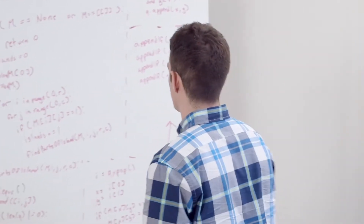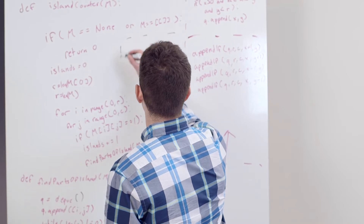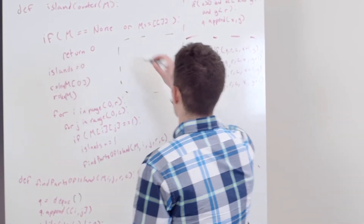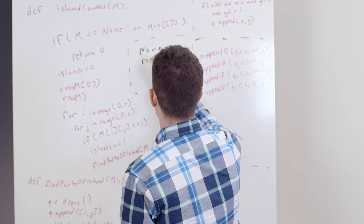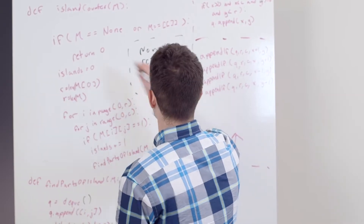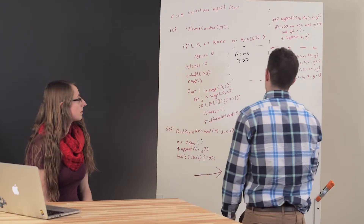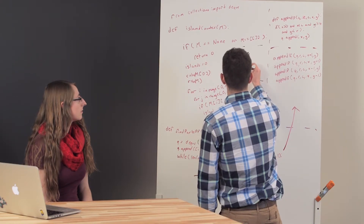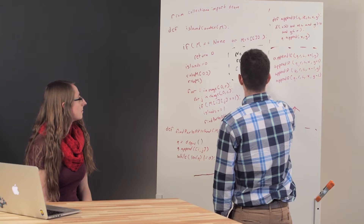Now I'm just going to go ahead and go through my test cases that I mentioned before. I'm just going to put them in this little box here. We had our none and our empty brackets. When we go through these, they return zero immediately, so that's working. What about when we actually have a working test case that goes through most of this code here?